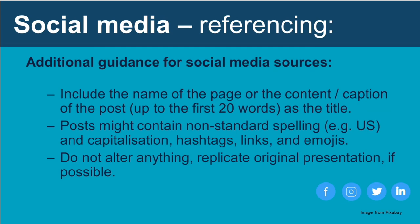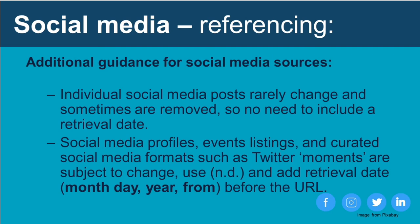APA 7 includes more guidance about referencing and citing social media content such as Twitter, Facebook, Instagram, and LinkedIn. Include the name of the page, the content or caption of the post, and just the first 20 words as the title. Some content may include non-standard spelling, hashtags, and emojis — try not to alter anything and replicate the original post if possible. Individual social media posts are typically not subject to change, so give the full date after the author's name. For social media profiles, events listings, and curated formats such as Twitter Moments — which are subject to change — use 'n.d.' and add 'Retrieved Month Day, Year' before the URL.